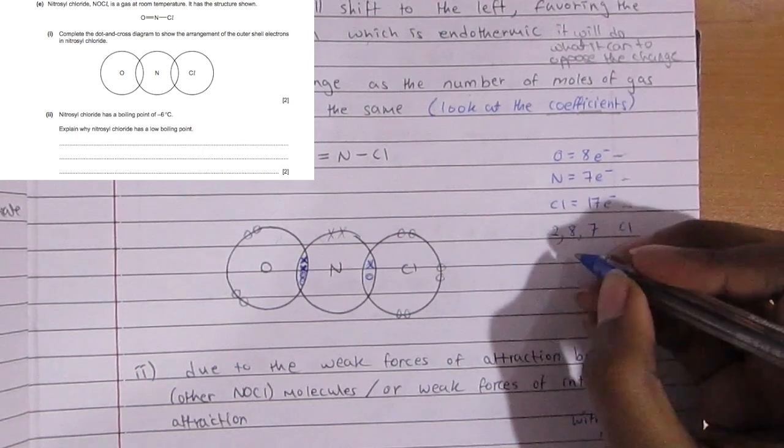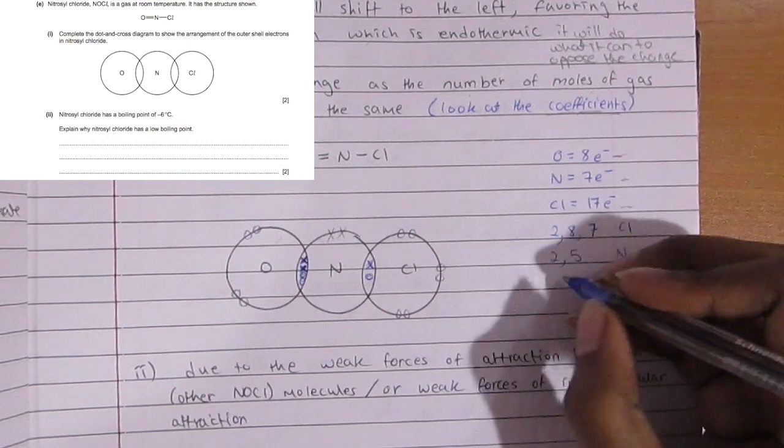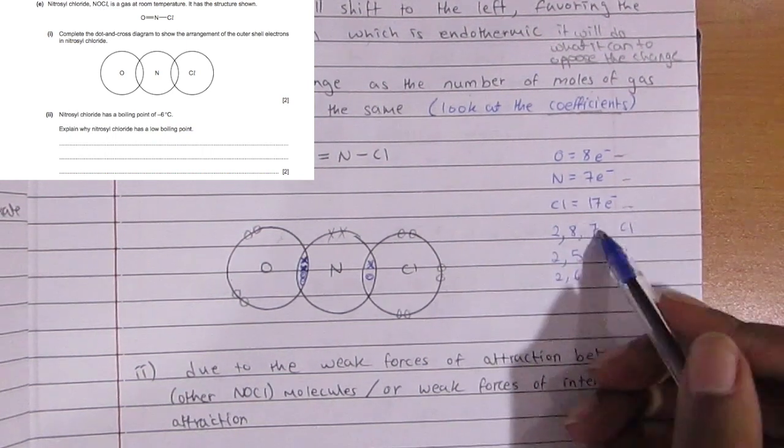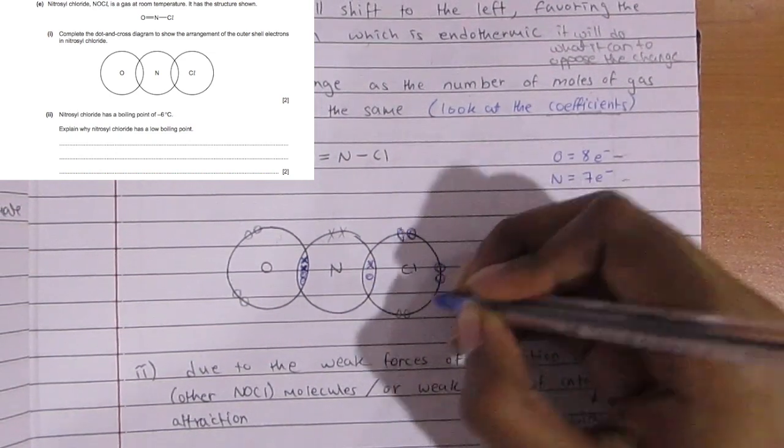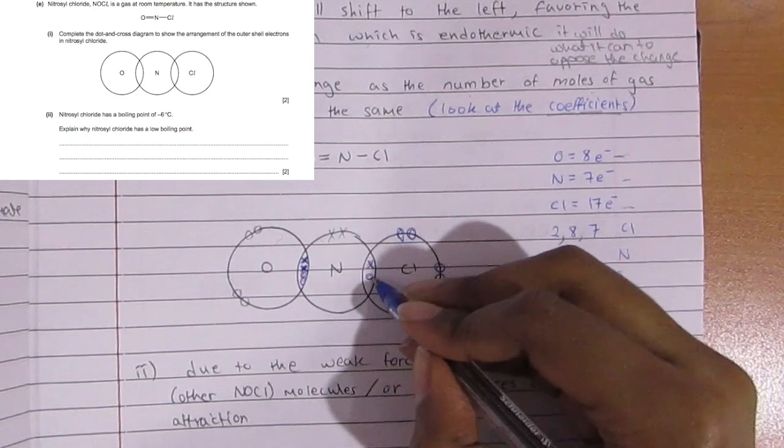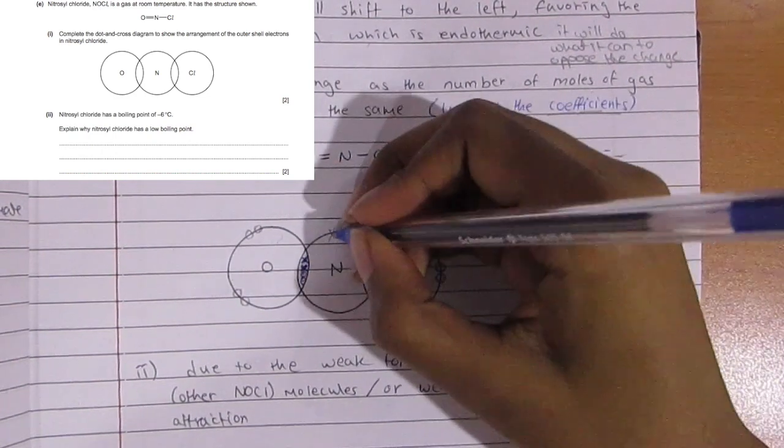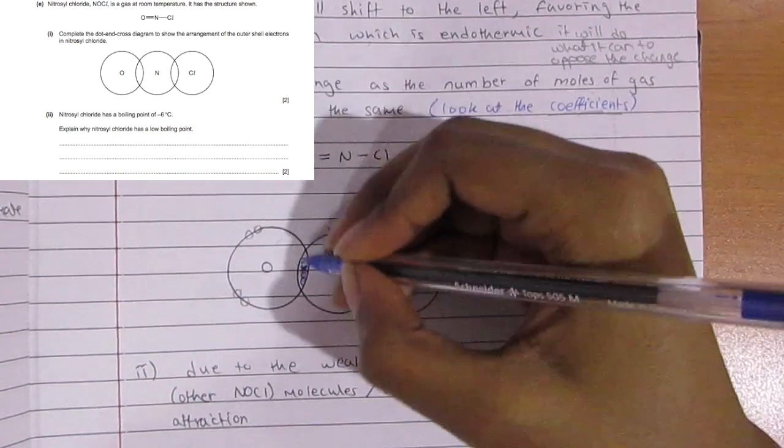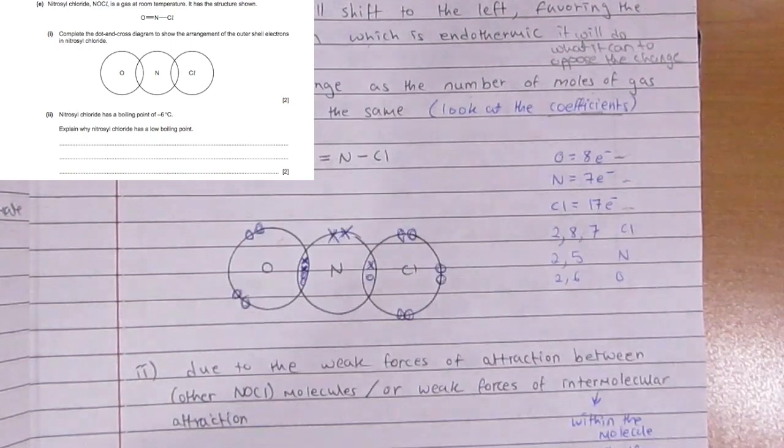If you write out the electron configuration for chlorine, it's 2, 8, 7: two in the first shell, eight in the second, seven in the last. Do the same for nitrogen and oxygen. When doing this, only show the valence electrons. We have seven for chlorine and already used one, so we add the other six. Nitrogen used three, so we place the other two. Oxygen used two, so we place the other four. All of them have eight electrons, which is the octet, keeping them stable.